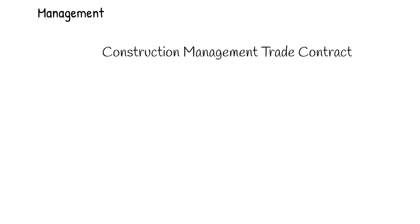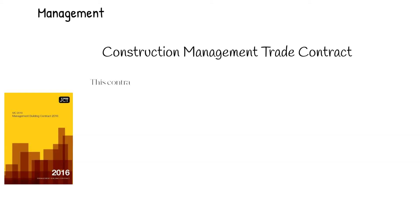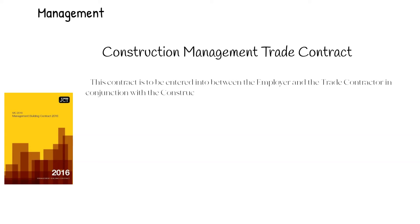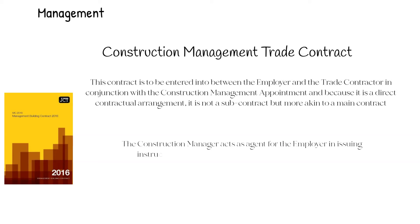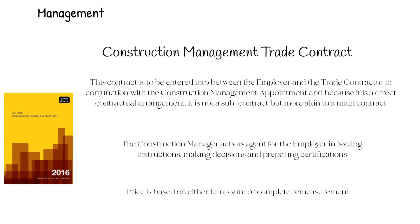Construction Management Trade Contract: This contract is to be entered into between the employer and the trade contractor in conjunction with the construction management appointment. Because it is a direct contractual agreement, it is not classed as a subcontract, but more akin to a main contract. The construction manager acts as an agent for the employer in issuing instructions, making decisions and preparing certifications. Price is based on either lump sum or complete remeasurement. Interim payments are either monthly or at predetermined stages.